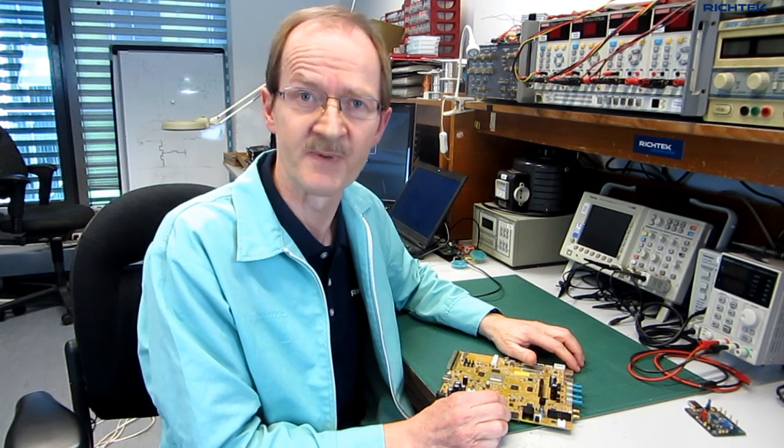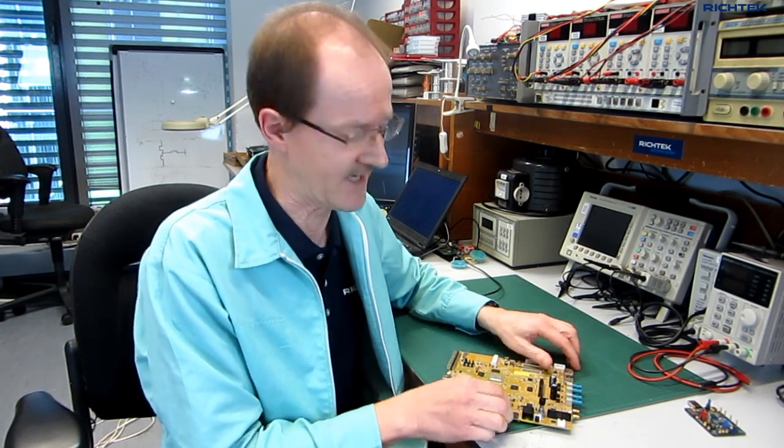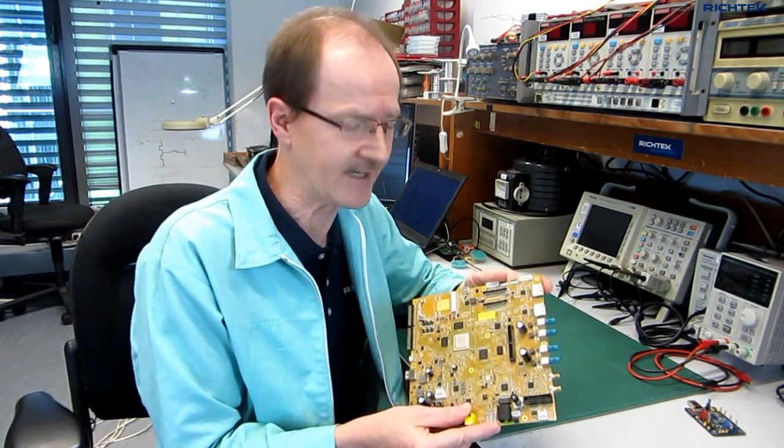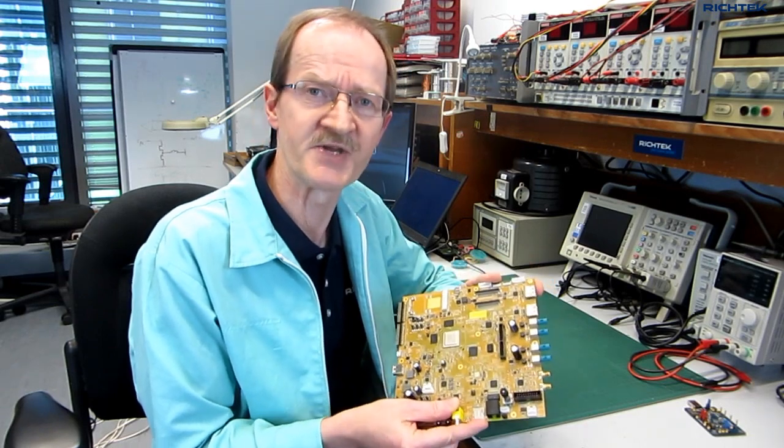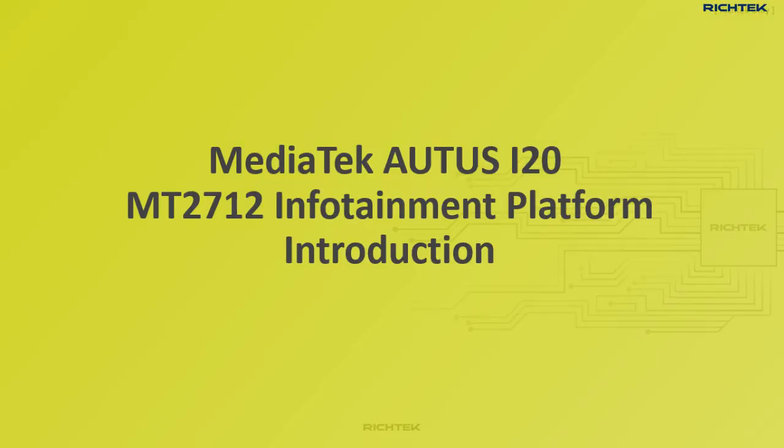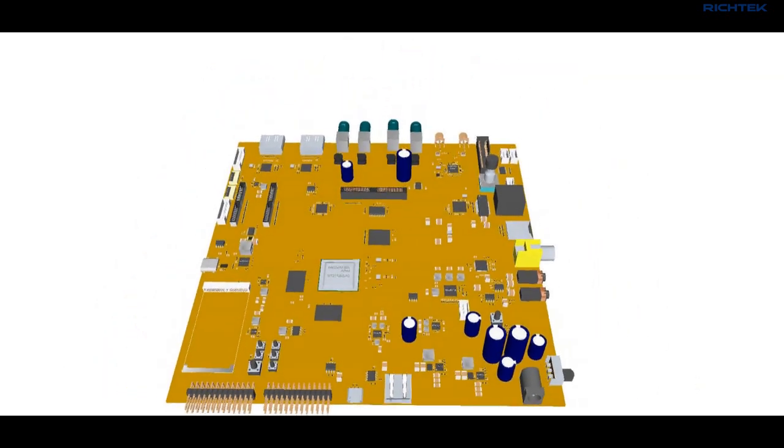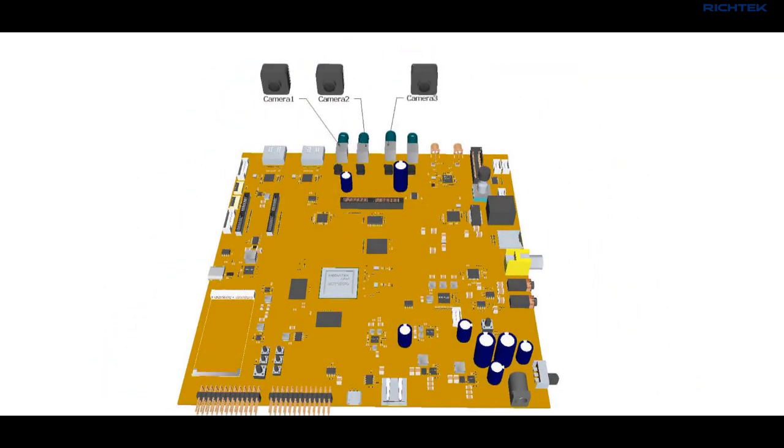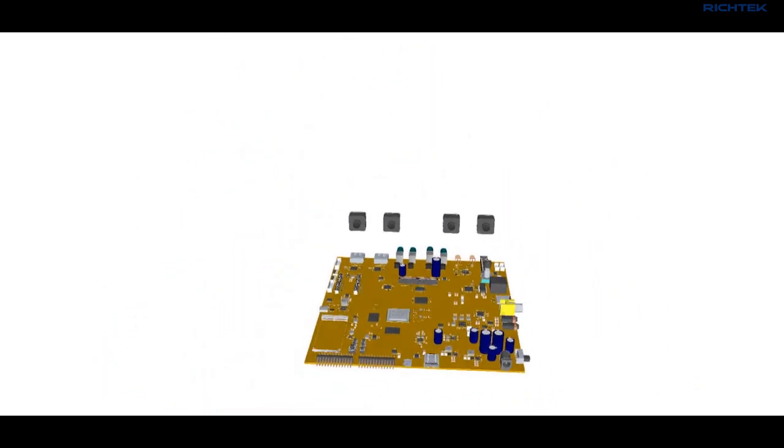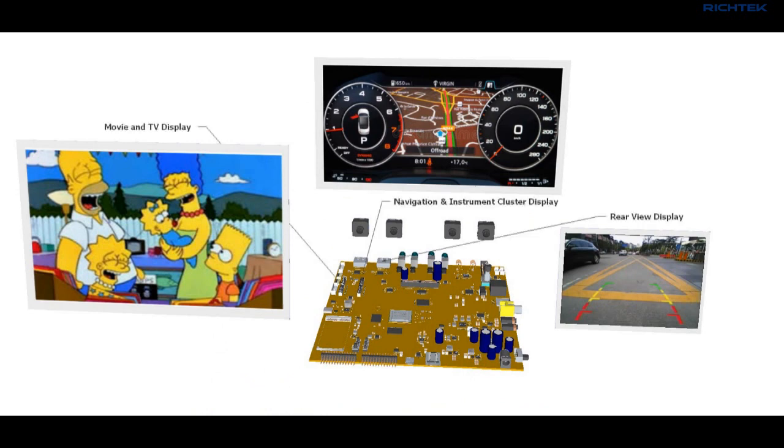Welcome to the lab. I will explain automotive electronic power design by means of this MediaTek car infotainment evaluation board. This circuit board has lots of connectivity like USB, audio and microphone. It connects up to four cameras and it can drive up to three displays like navigation and instrument cluster, a rear display for movie and TV watching, and the rear view camera display.